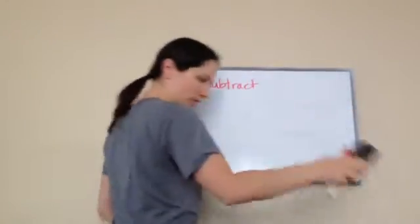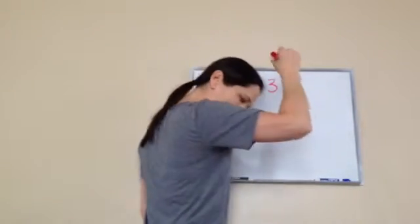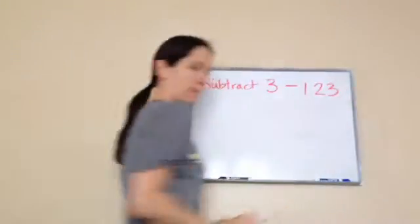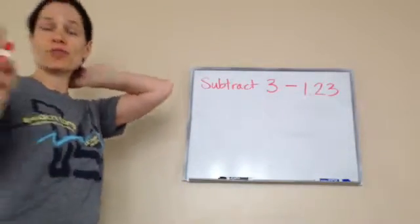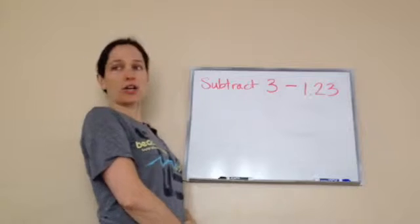I'm going to let you do it on your paper. Here's what it tells me to do: Subtract 3 minus 1.23. Now you're going to have to put two things together to know how to do this one. Okay. How are you going to set this one up?